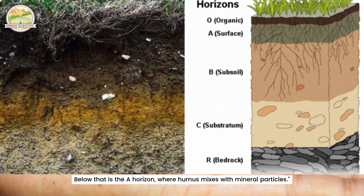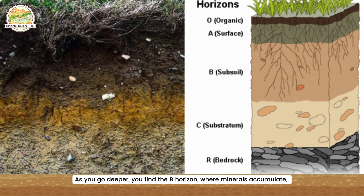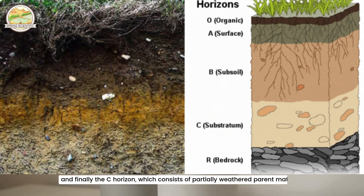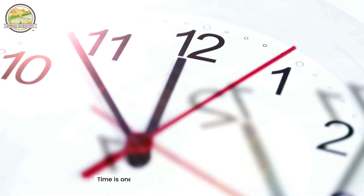Below that is the A horizon, where humus mixes with mineral particles. As you go deeper, you find the B horizon, where minerals accumulate, and finally the C horizon, which consists of partially weathered parent material.